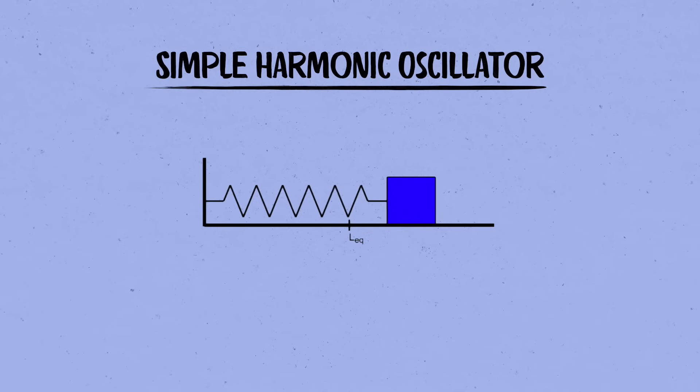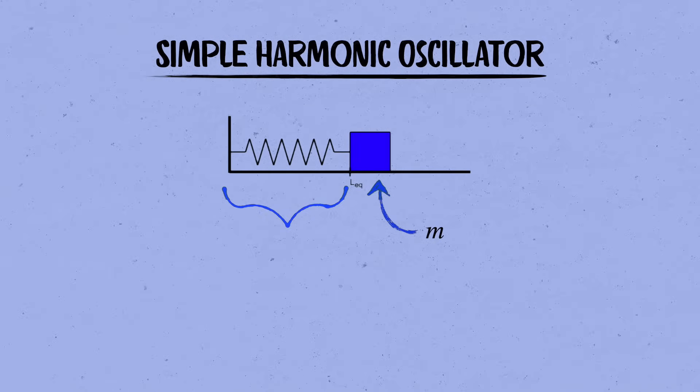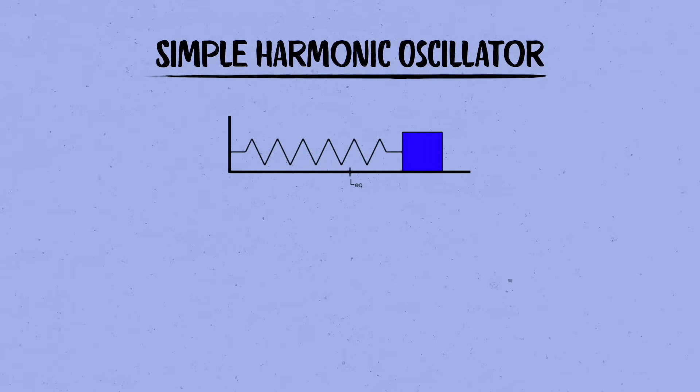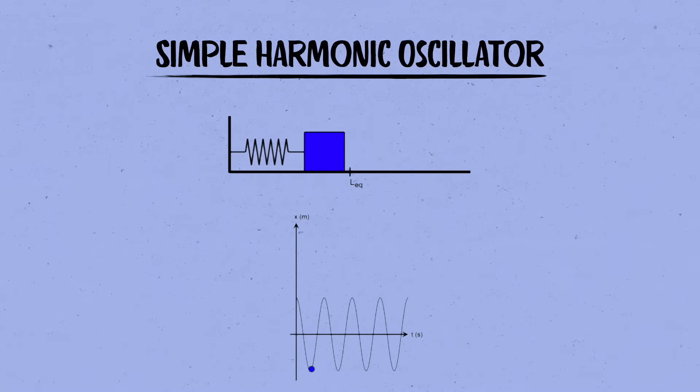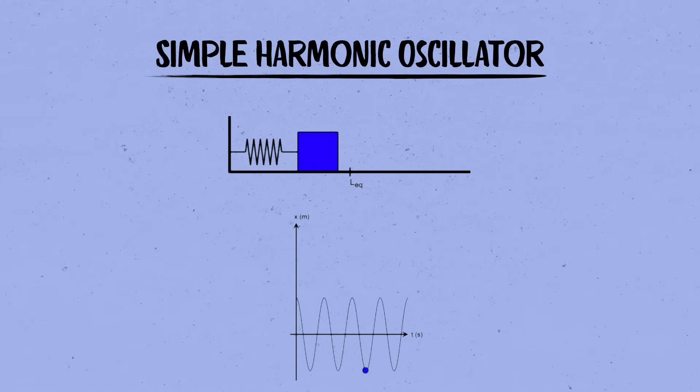We'll start by reviewing the basic setup, and after that we'll get into why it's so important. We've got a block of mass m sitting on a frictionless table. It's hooked up to a spring, which is itself anchored to a wall on the other end. If you give the block a little kick, or if you pull it out a ways and then let it go, it'll oscillate back and forth from side to side like a sine or cosine function. We call these sinusoidal oscillations simple harmonic motion.